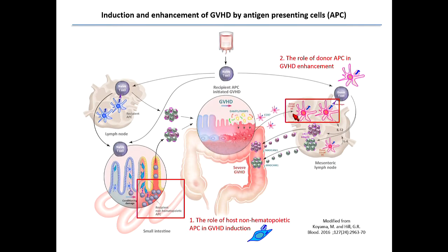Those donor dendritic cells are migrating into the mesenteric lymph node. In this process, the subset of the donor dendritic cells is really important. They present antigen to T-cells again here. The T-cells proliferate and activate and imprint the integrin alpha-4-beta-7, which is the ligand of MADCAM-1 expressed on the inflamed mucosal tissue. So they return to the intestine and make severe GvHD — this is the GvHD enhancement process. My second half of the talk is about the role of donor APC in this enhancement.